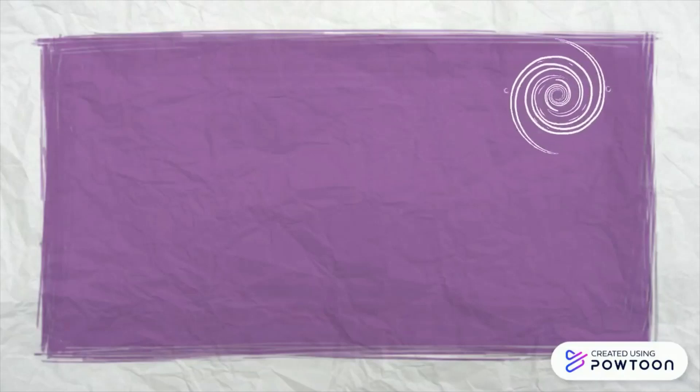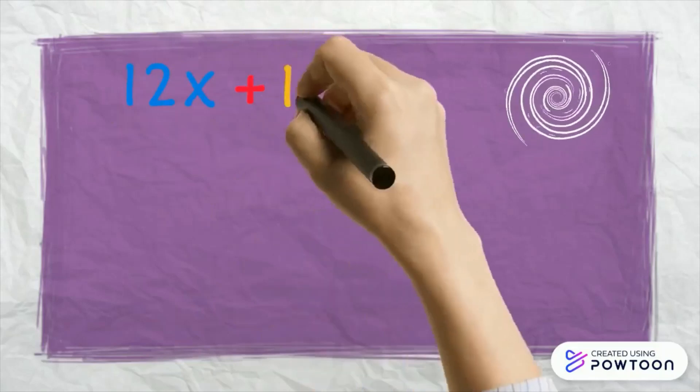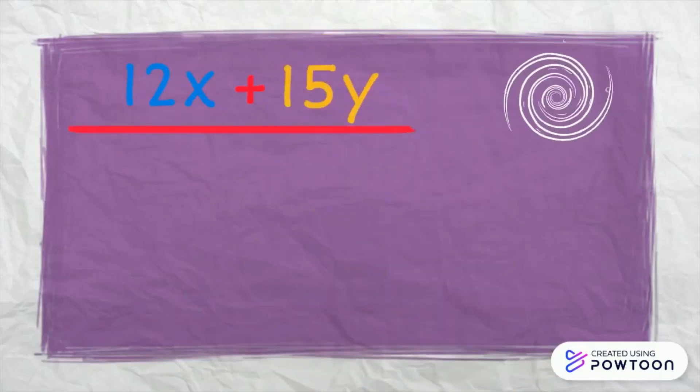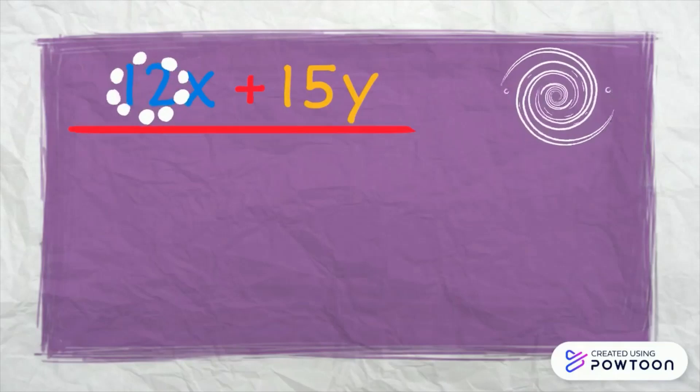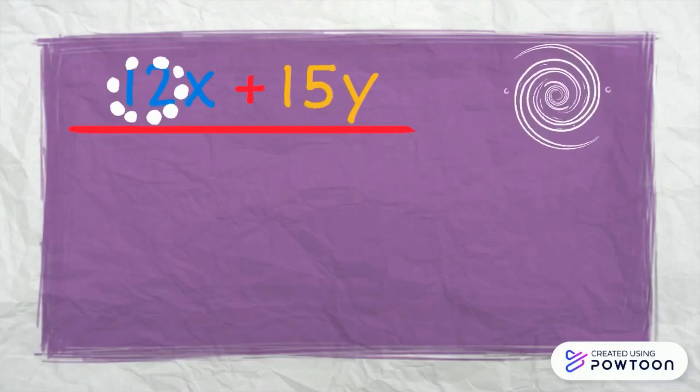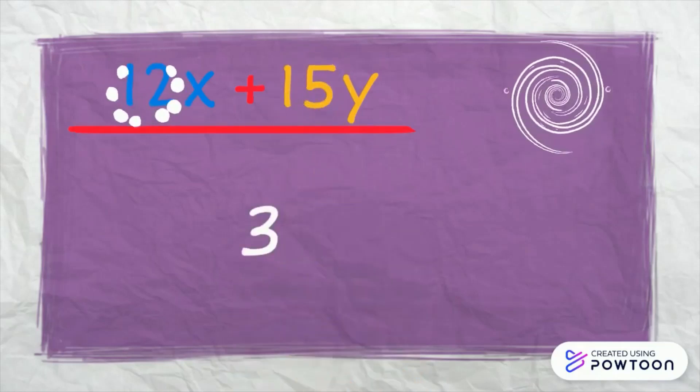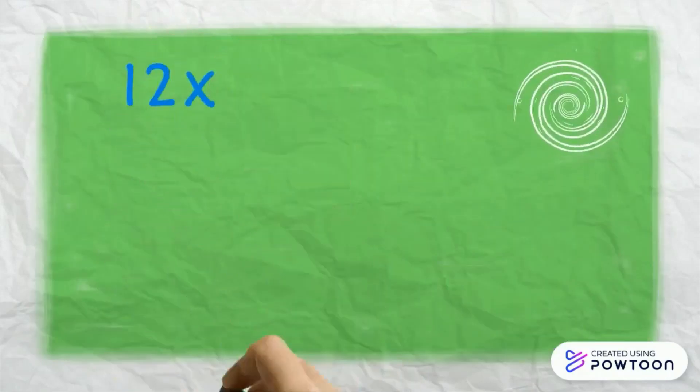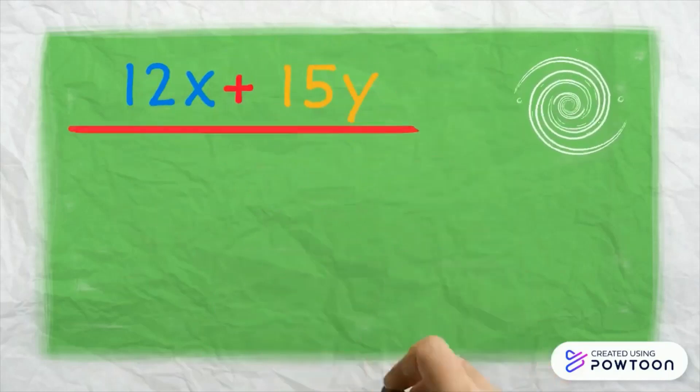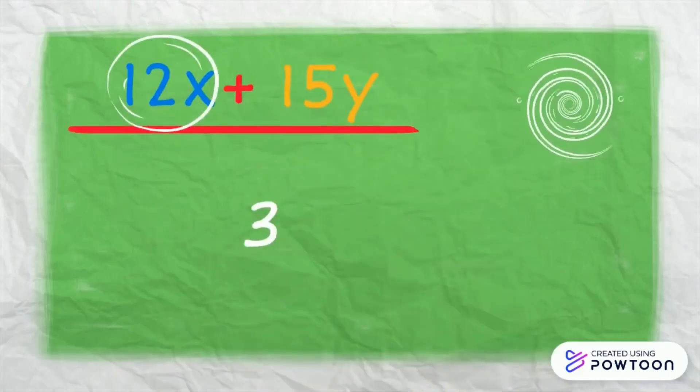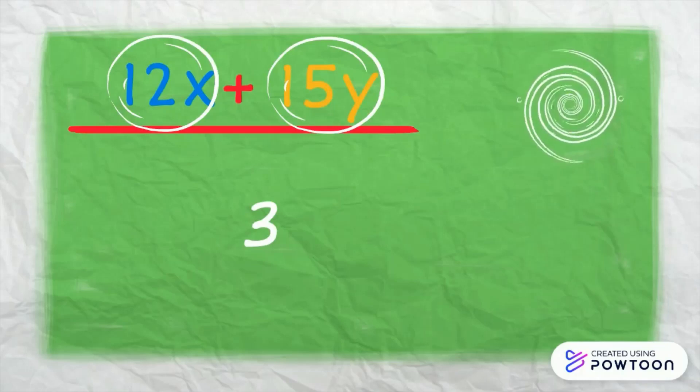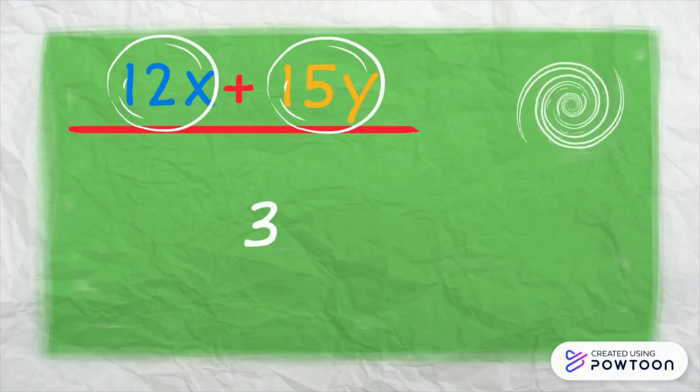Let us look for the greatest common factor of the numerals first, 12 and 15. The GCF is 3, right? The next step is to examine the variables or letters. The first term has x and the second term has y. And they are not the same. Therefore, there is no common factor among the variables.